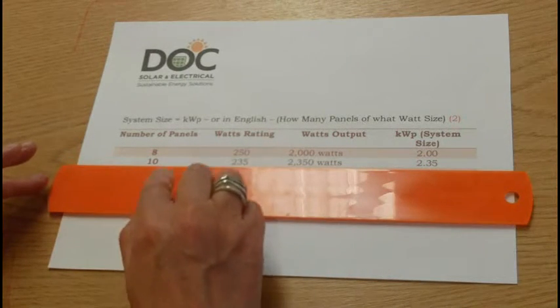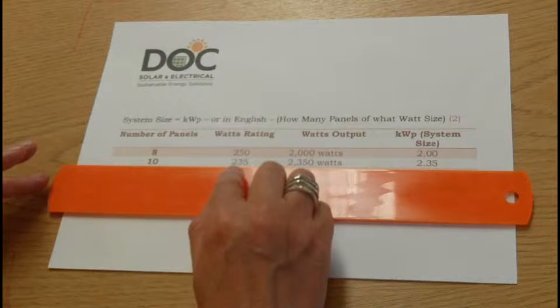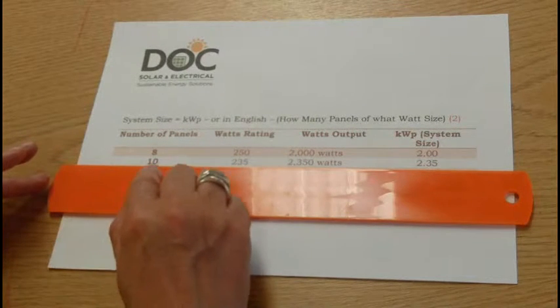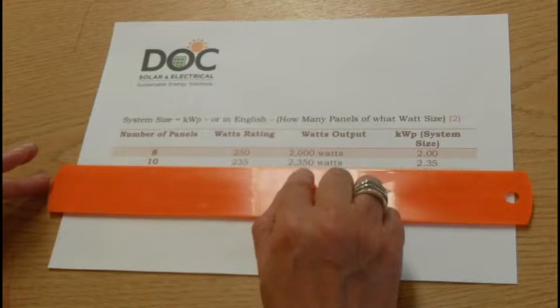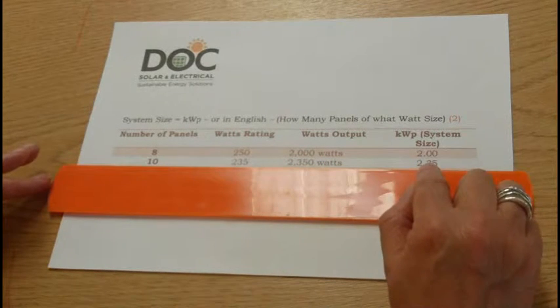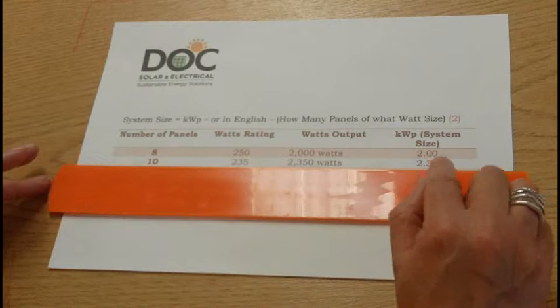A 10-panel system of panels rated at 235 watts times 10 by 235, you'll get 2,350 watts, or a 2.35 kilowatt peak system.